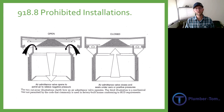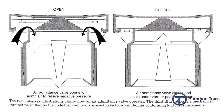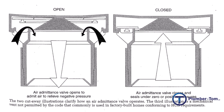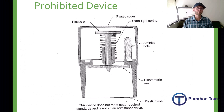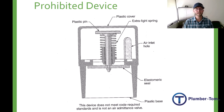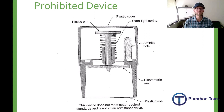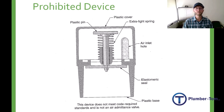Fundamentally, how do air admittance valves work? The ones properly designed and approved by code standards use a mechanism inside that allows air in as the diaphragm flexes with negative pressure, but when positive pressure comes it closes and seals so sewer gas cannot come out. There is also a prohibited device used commonly in manufactured homes that does functionally the same thing, but these are very faulty and noisy. While you can purchase them at local suppliers or hardware stores, they are not approved — make sure to install only air admittance valves approved by code.